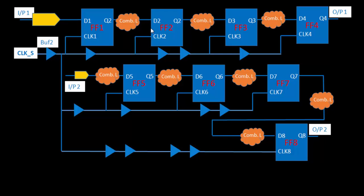Global skew is the difference between the shortest clock path and the longest clock path. In this design, the shortest clock path is CLK1. The longest could be CLK4, CLK7, or CLK8, depending on which delay is greater. Global skew is the difference between the shortest and the longest path, regardless of whether those paths belong to related or unrelated flip-flops.